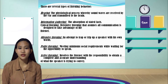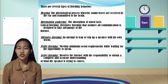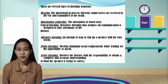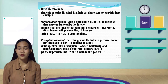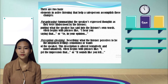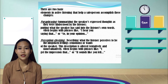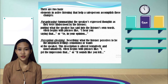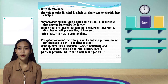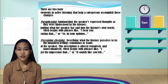A significant part of the salesperson's job is to change the customer's perception of a product or to determine what changes in the company's product or service are required to better serve the customer. There are two basic elements in active listening that help a salesperson accomplish these changes. The first one is paraphrasing — summarizing the speaker's expressed thoughts as understood by the listener, putting what the speaker has said into the listener's own words. It often begins with phrases like 'I hear you saying that' or 'so in your opinion.'